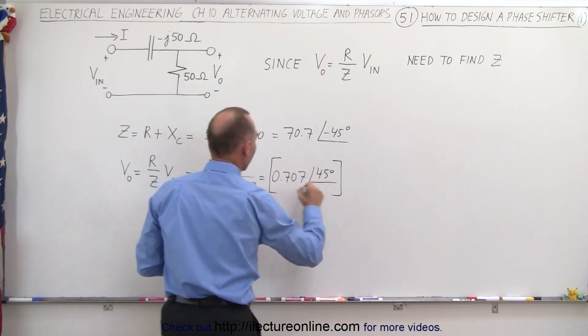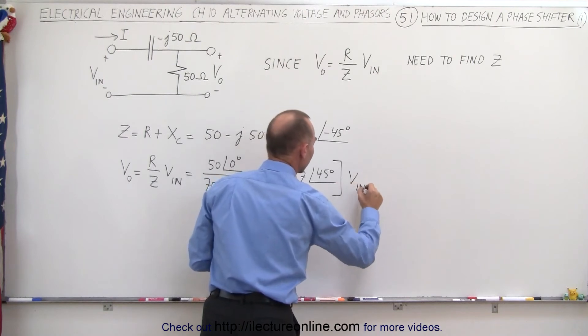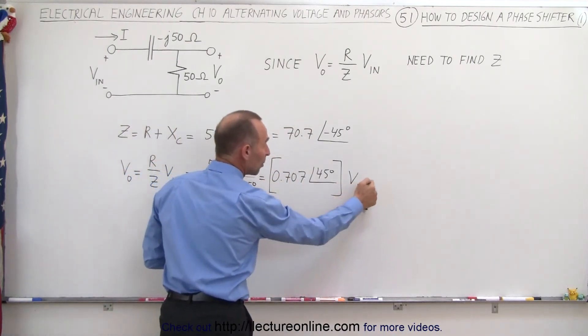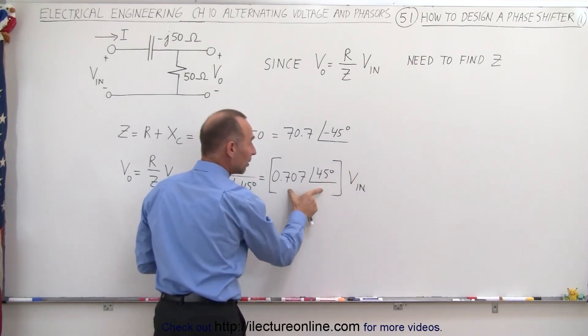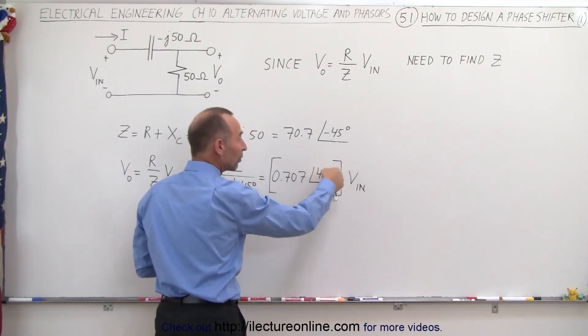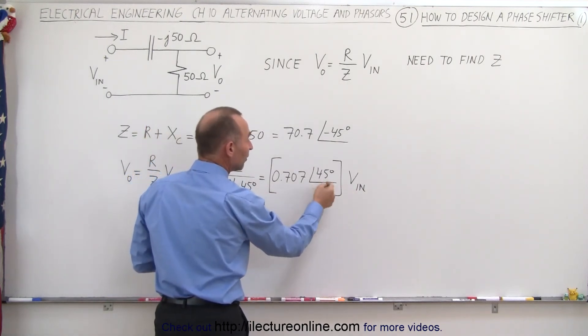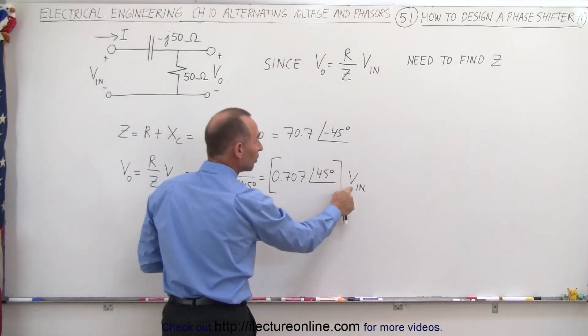and the whole thing multiplied by Vin. So notice that whatever the phase angle is of the input voltage, when we multiply that times this quantity here, we simply add 45 degrees to the phase, that means the output voltage has a phase difference of 45 degrees in the positive direction compared to the input voltage.